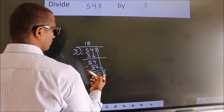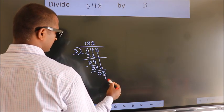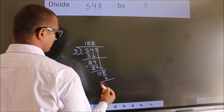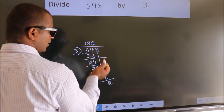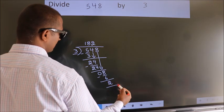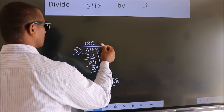A number close to 8 in the 3 table is 3 twos, 6. Now we subtract. We get 2. No more numbers to bring down, so we stop here. This is our remainder. This is our quotient.